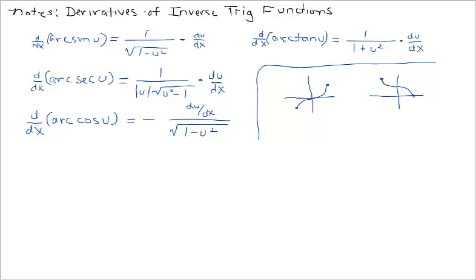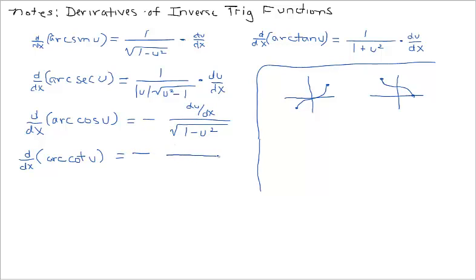Now let's look at the derivative of arc cotangent. Looking at the graphs: the arctangent graph is always increasing, so its rate of change is positive. Arc cotangent resembles arctan but is decreasing, so its rate of change is negative. For arc cotangent, we just take the arctan formula and negate it: negative du over dx over 1 plus u squared.